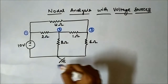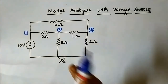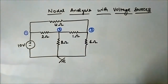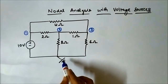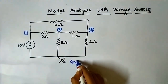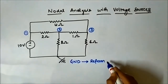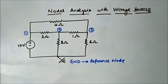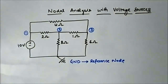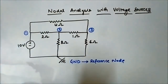Now, this circuit, if we deal with it through nodal analysis, will require us to pay some special attention. Why? Because in between node one and ground — the ground is also called the reference node — there is a voltage source between node number one and ground. So, what will be the voltage at node one?